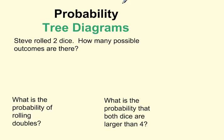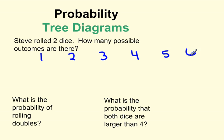Our last example is about rolling dice. Steve rolled two dice. How many possible outcomes are there? For the first die, he could roll a one, two, three, four, five, or six. Then he rolls his second die, and from that he can also get a one, two, three, four, five, or six.